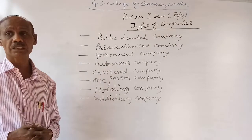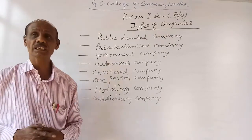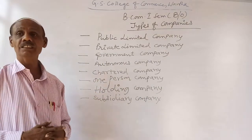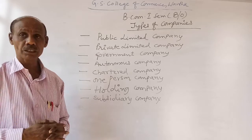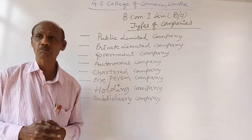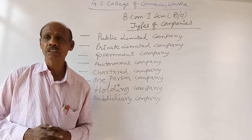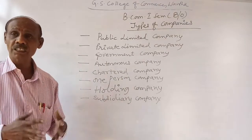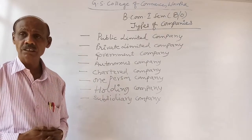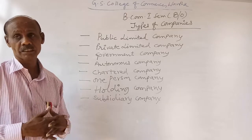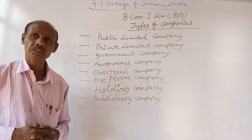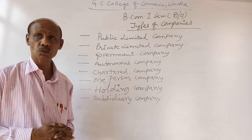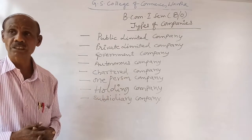The next type is a one-person company. It is a new creation as far as Indian companies are concerned. In 2013, under the Indian Companies Act 2013, a single person can create a company by following the prescribed norms. If a company has been created, managed, and controlled by a single person, it is called a one-person company.